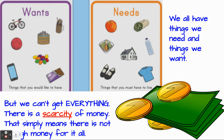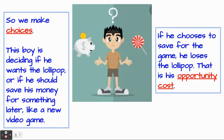We all have things we need and things we want, but we can't get everything. There is a scarcity of money — that simply means there is not enough money for it all. There's a limited amount of money that we have, and first that money needs to go to the needs. We need clothing, we need food — we can choose which foods — but we need to satisfy those needs. Then you get to the wants. You really need to make sure you have shoes before you have a bike, and shelter before you get a chocolate sundae. There is scarcity of money, which leads to choices.